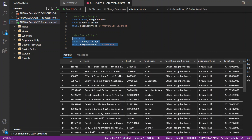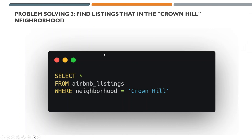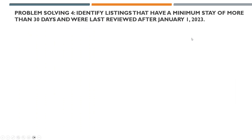Let's look at one more problem solving under comparison. The query selects star, which is selecting all, and filters the entire table to only Grand Hill. Now let's look at problem number four for comparison.